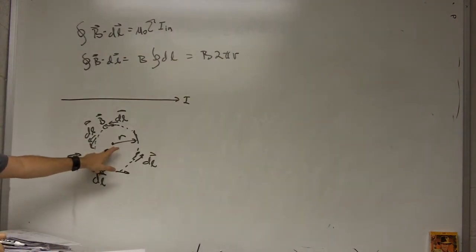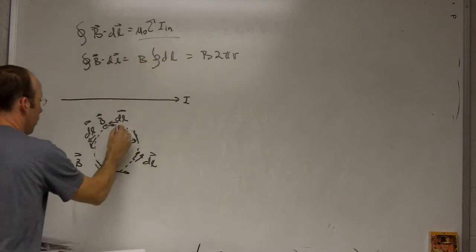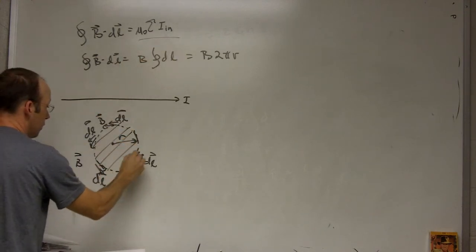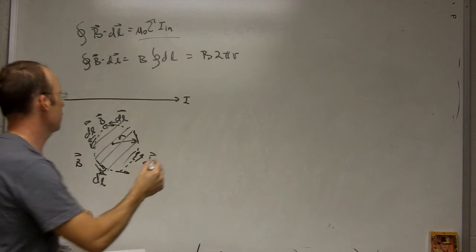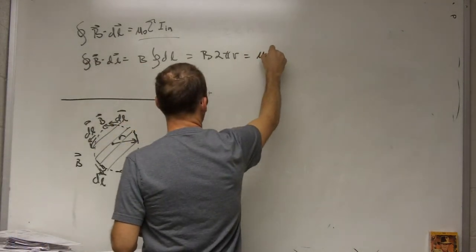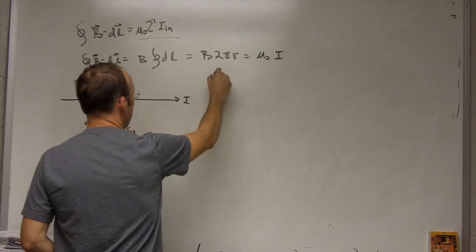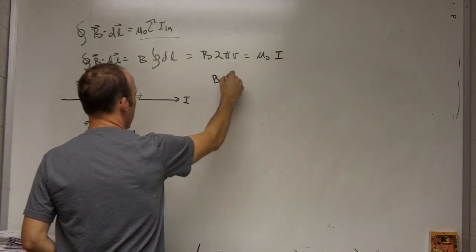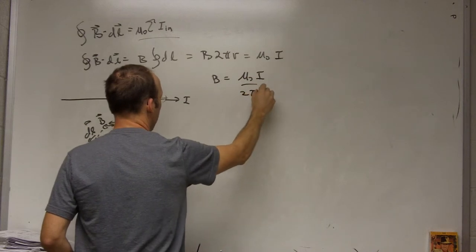Now here is my, I want to do this side. Now here I have this area, right? How much current passes through that? Well, I only have one wire with the current I going through. So this is just going to be mu naught I. Now I want to solve for the magnetic field B and I get B equals mu naught I over 2 pi R.